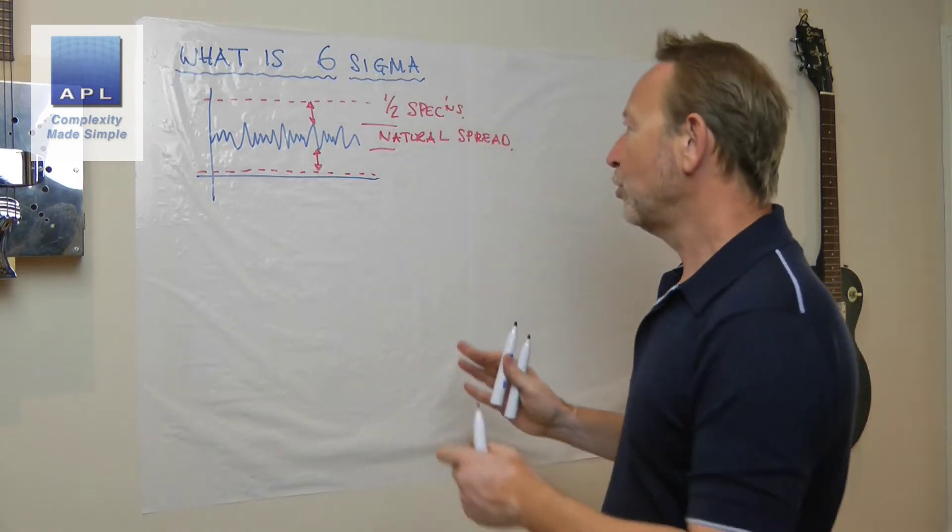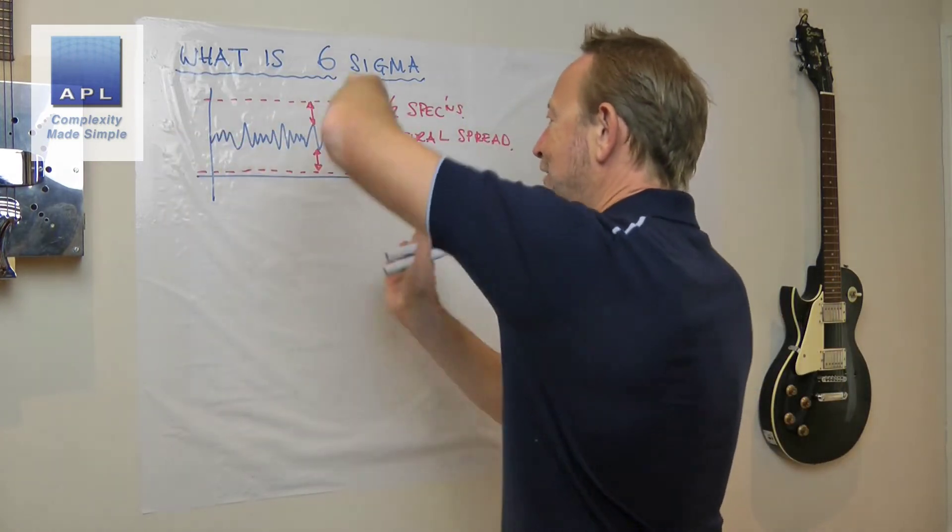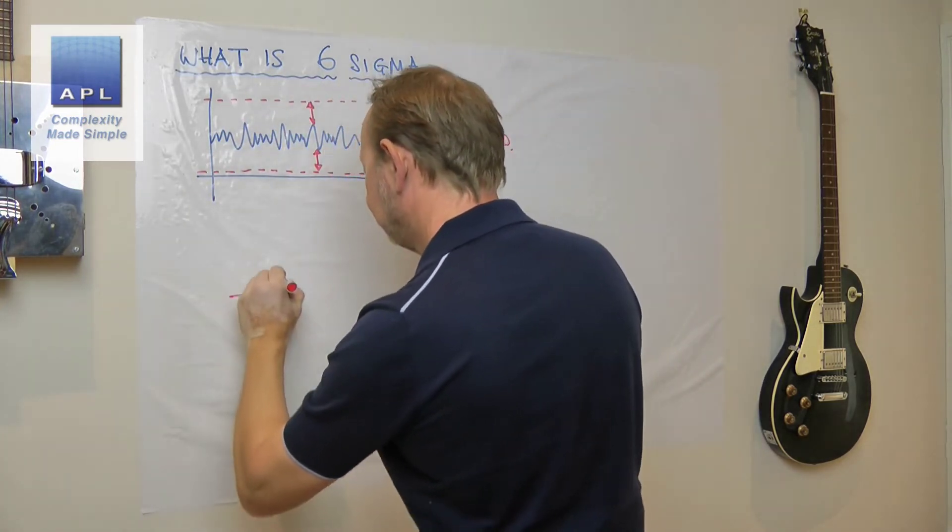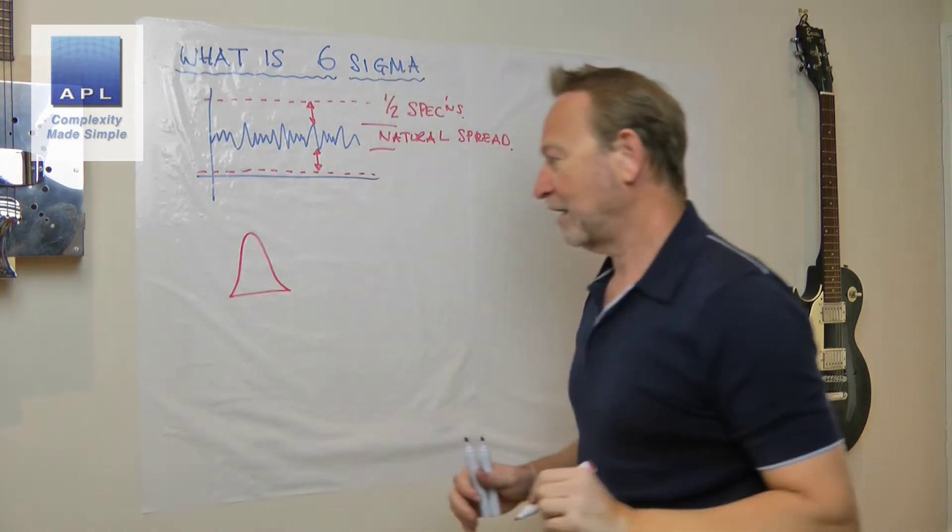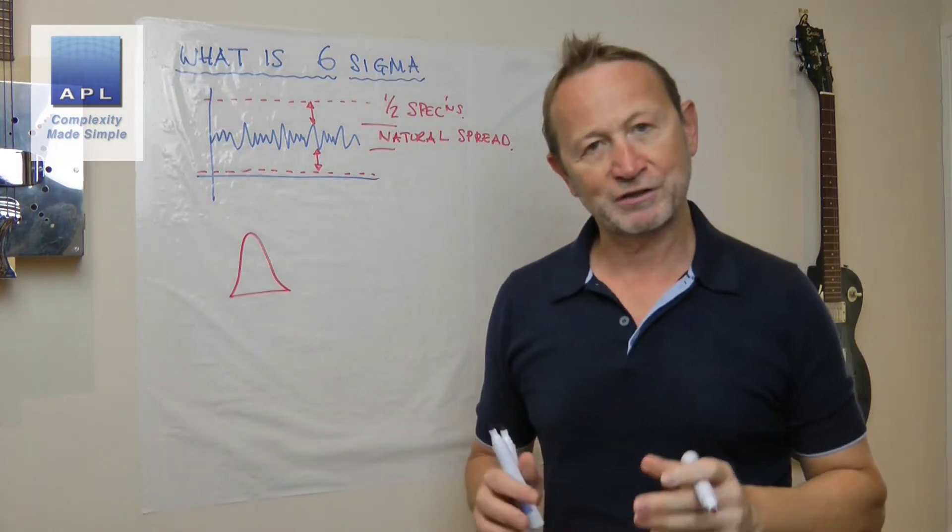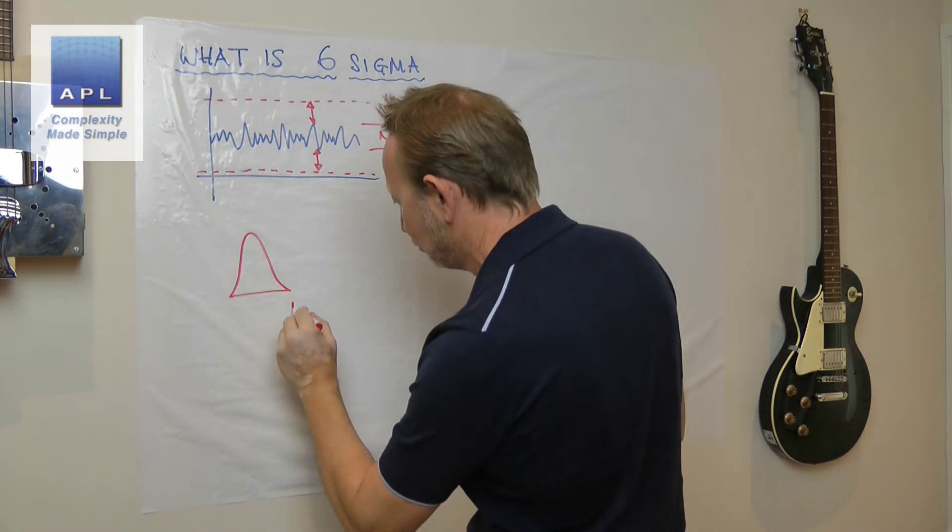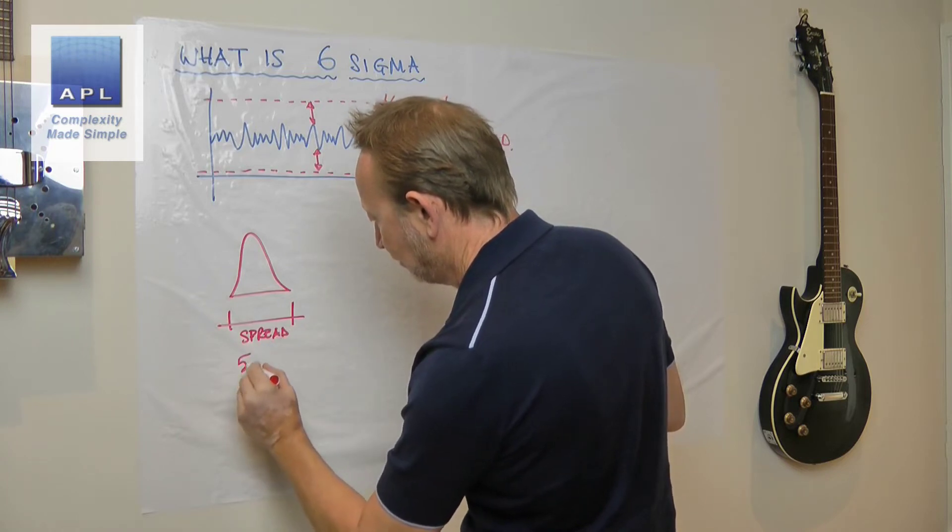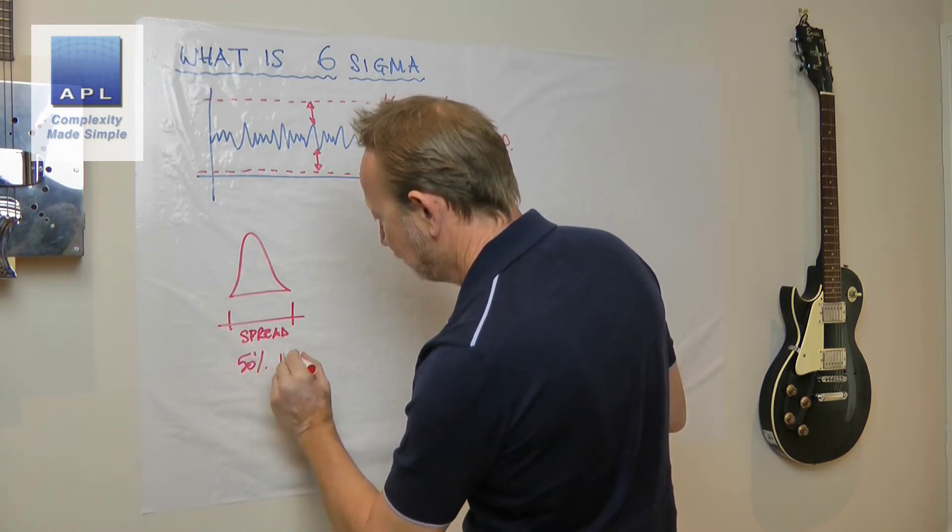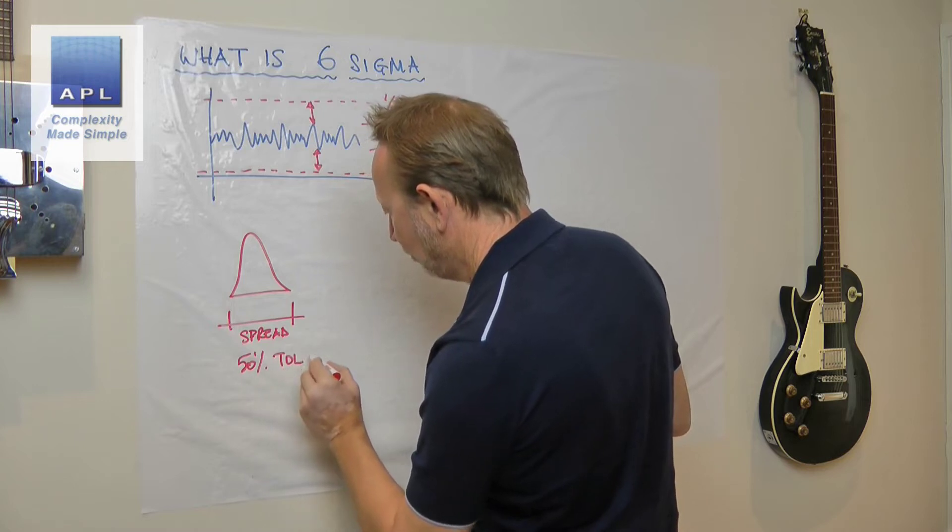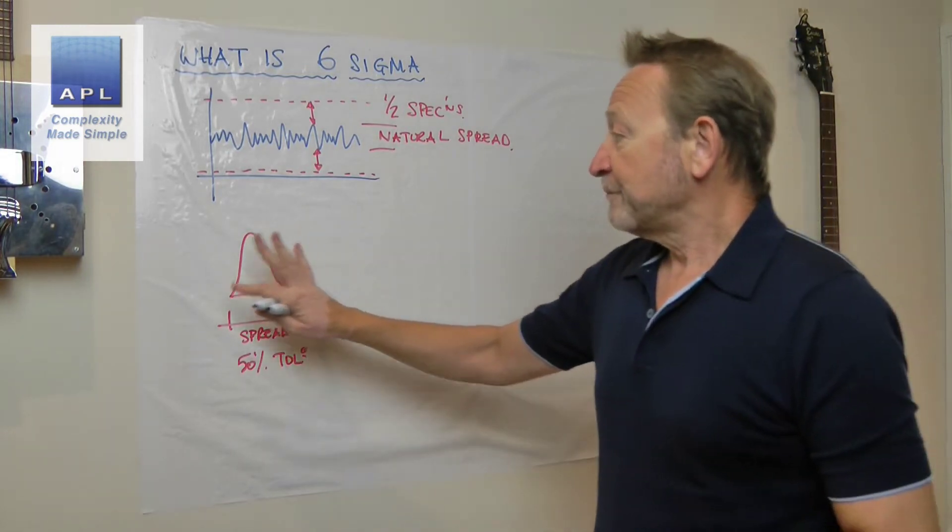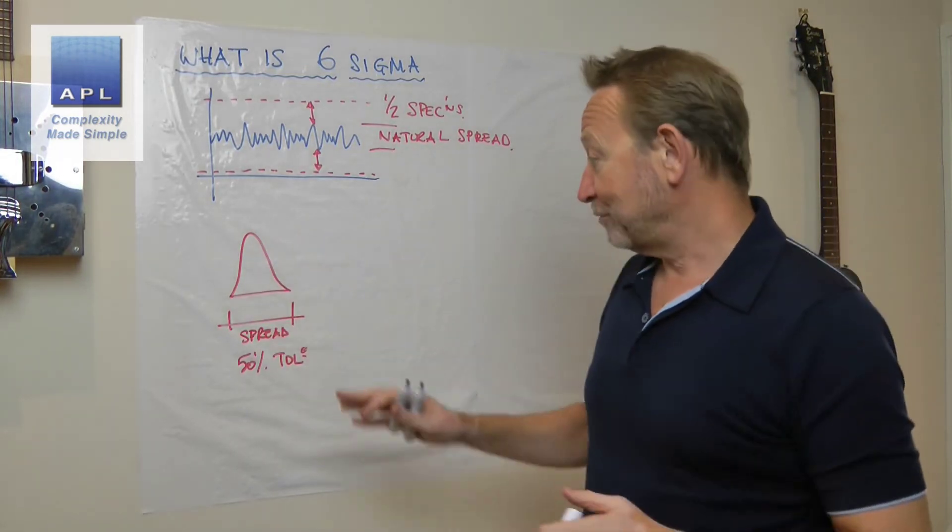But what we like to do is take that data, turn it sideways, and look at it as a distribution. What we are basically saying is this spread here only takes up 50 percent of your tolerance. That's really what Six Sigma means—it only takes up 50 percent of the tolerance.